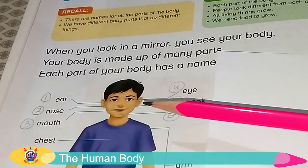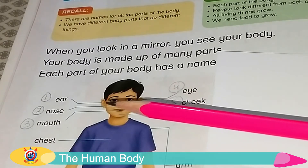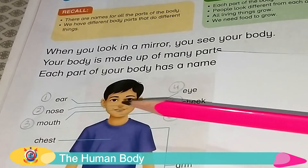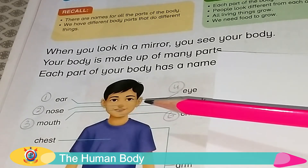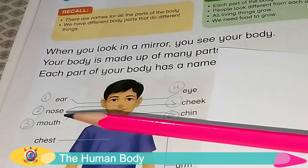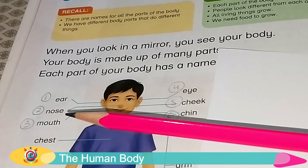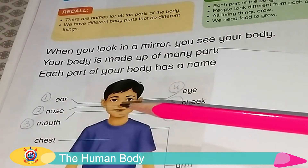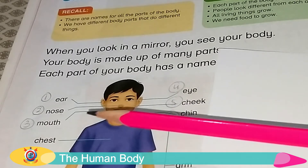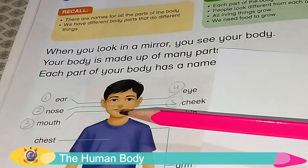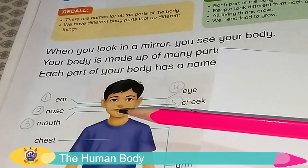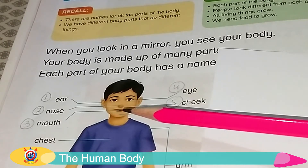Ear, ear. How many ears do we have, students? We have two ears. Nose. We have one nose. Mouth, mouth. We have one mouth.